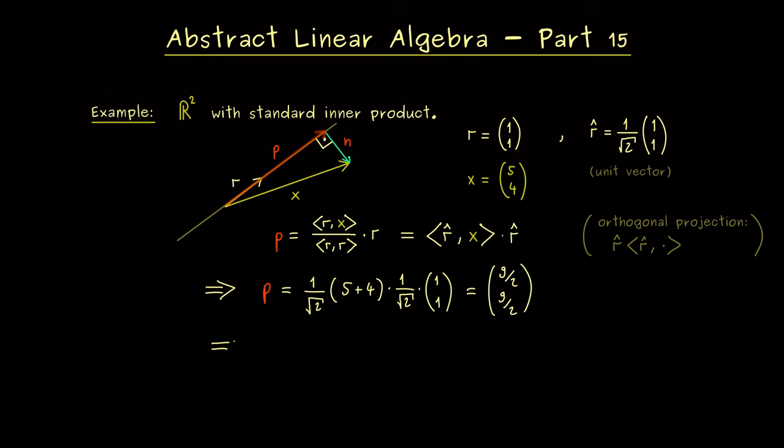Hence what we get is simply 9 halves in both components.